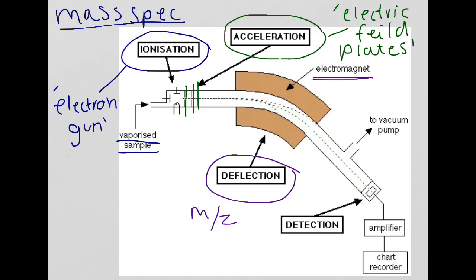The final stage is detection. What happens here is the electric current is measured as the ions land on the plate, and the relative abundance is calculated. It's produced on a mass spectrometer graph, and that's how we work out relative isotopic abundance and so forth.